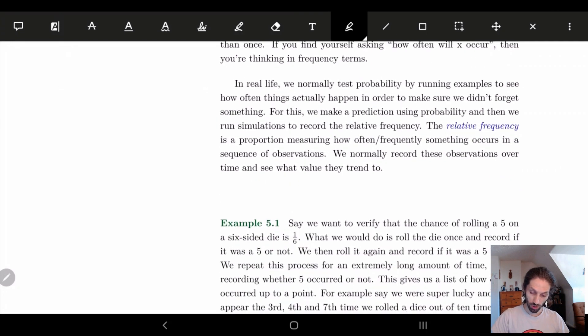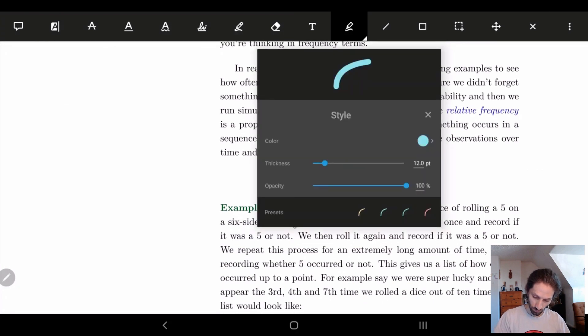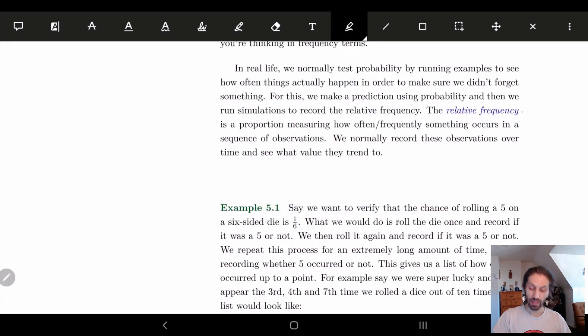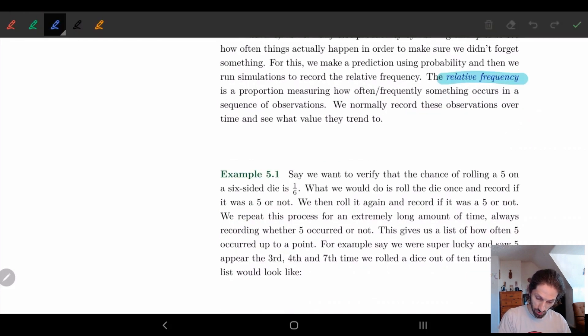So what we're going to do is we're going to define something called relative frequency. So what is relative frequency? It's basically when we're doing trials of a test. So we have some idea of something that's happening like rolling a dice. So we do multiple trials. We roll the dice many times and we record how often an event happens or doesn't happen. And so the relative frequency is basically keeping track, is a proportion which measures how frequently something occurs in a sequence of observations. Sometimes observations are called trials. You'll see that term a lot probably because I interplay between the two. So normally we record these observations over time and see where they trend to.